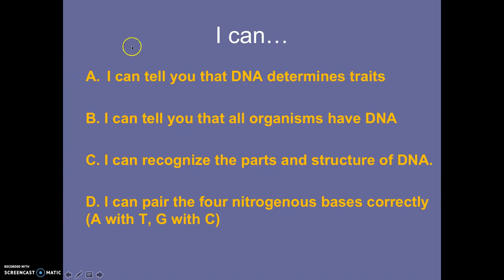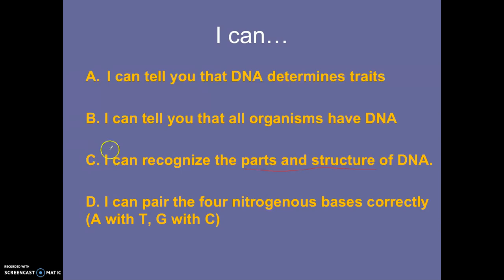By the time we finish with this lecture, you should be able to do these things: I can tell you that DNA determines traits. You should be able to say: I can tell you that all organisms have DNA. The next one is I can recognize the parts and structure of DNA — you need to be able to identify those parts and structure. And the last one is I can pair the four nitrogenous bases correctly, so A with T and G with C.